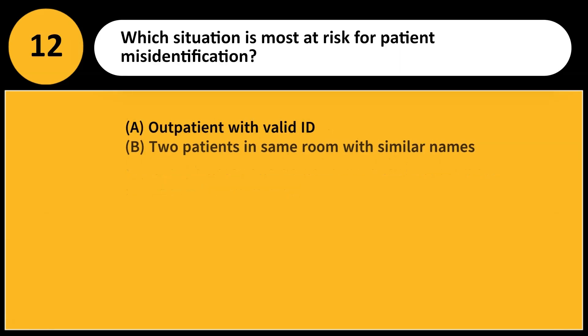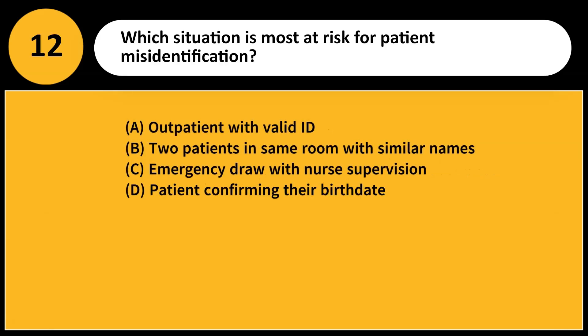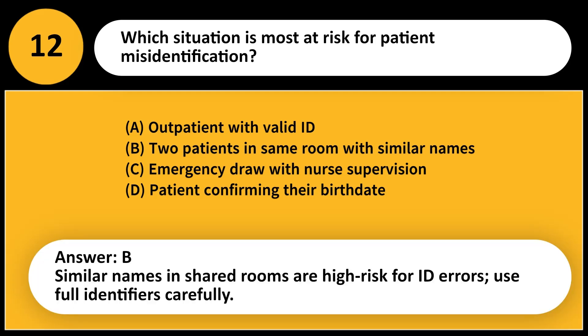Which situation is most at risk for patient misidentification? A. Outpatient with valid ID. B. Two patients in same room with similar names. C. Emergency draw with nurse supervision. D. Patient confirming their birth date. Answer: B. Similar names in shared rooms are high risk for ID errors. Use full identifiers carefully.